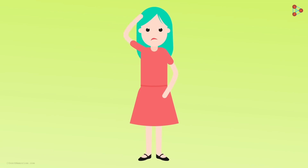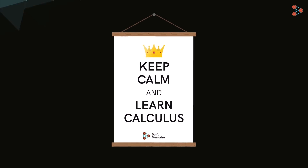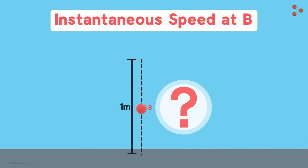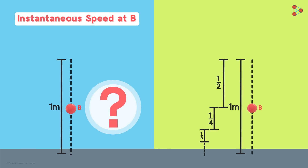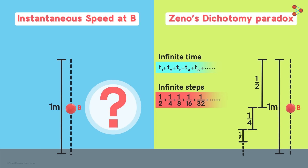Previously, we saw that a couple of thoughts were puzzling Nora, and we mentioned that calculus was the key to answer them. She wanted to know that when we drop a ball, how can we find its speed at an instant? And while thinking about this, she had another strange thought. She was convinced that mathematically, the ball should never reach the floor. This thought has puzzled many people for centuries, and it is called Zeno's Dichotomy Paradox.